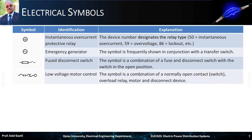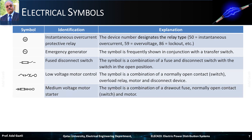The next symbol represents a low voltage motor control. The symbol is a combination of a normally open contact or switch, overload relay, motor, and disconnect device. The next symbol represents a medium voltage motor starter. The symbol is a combination of a draw-out fuse, a normally open contact or switch, and a motor.